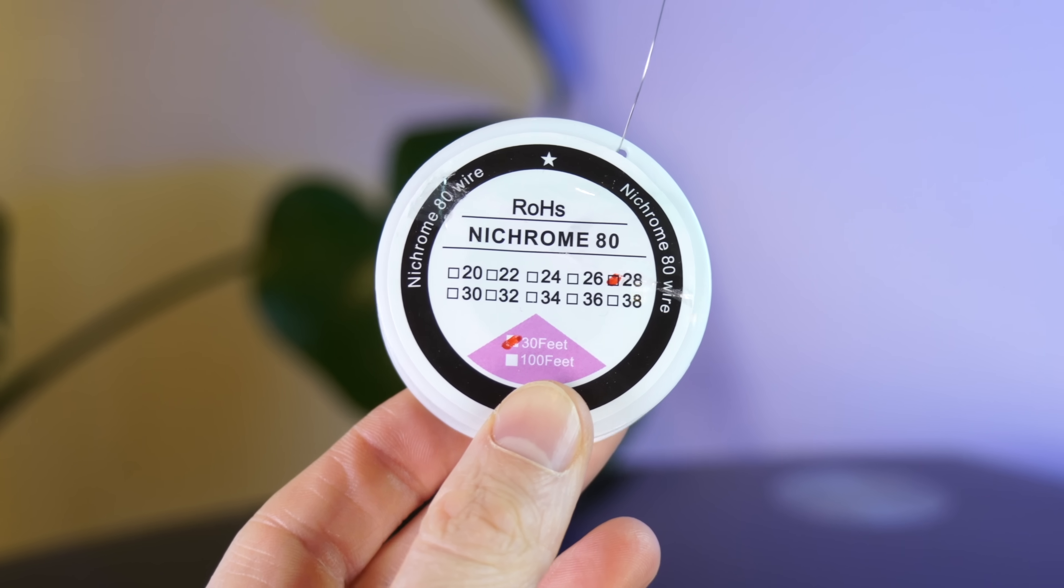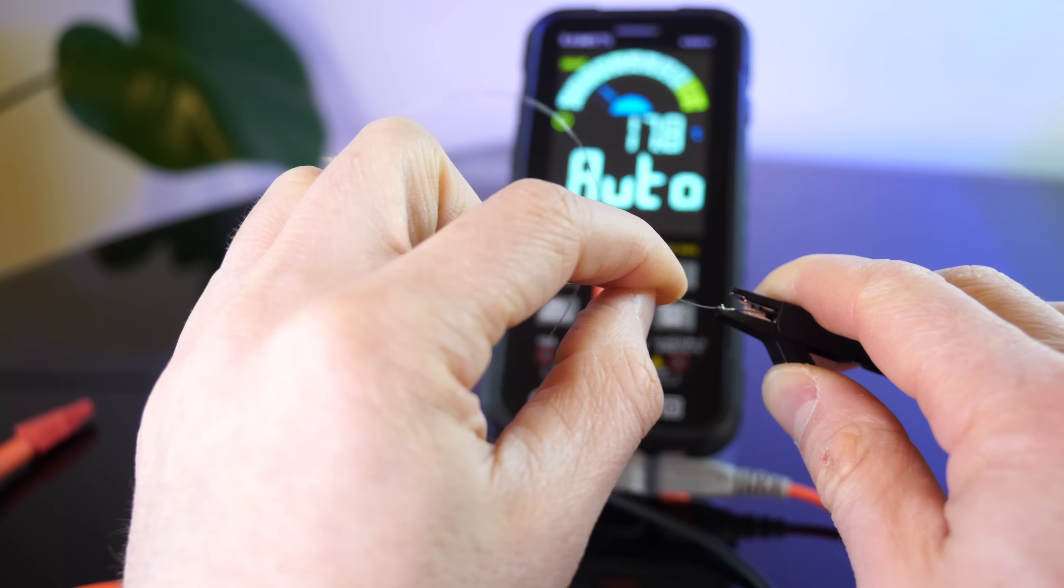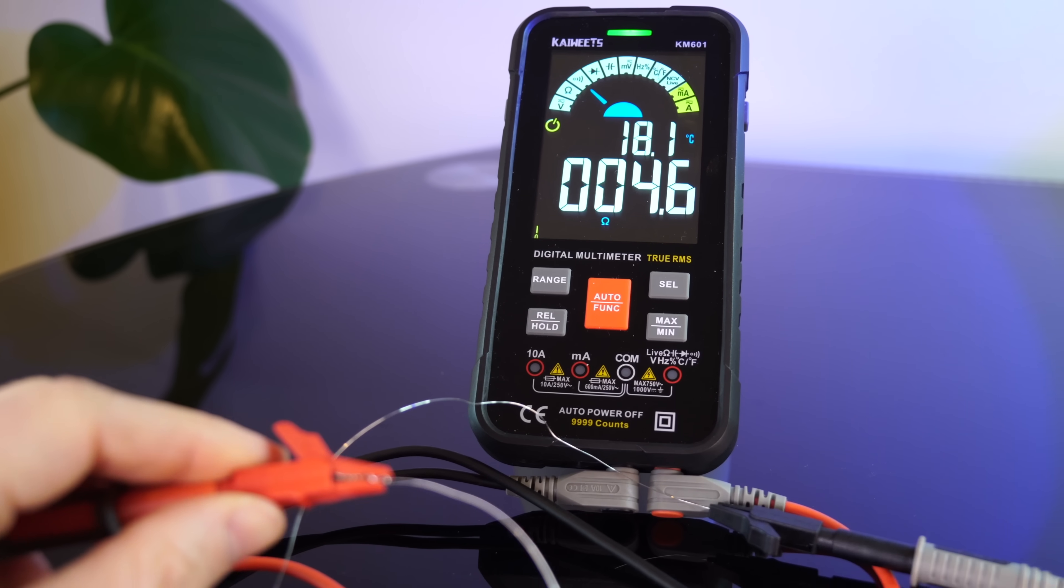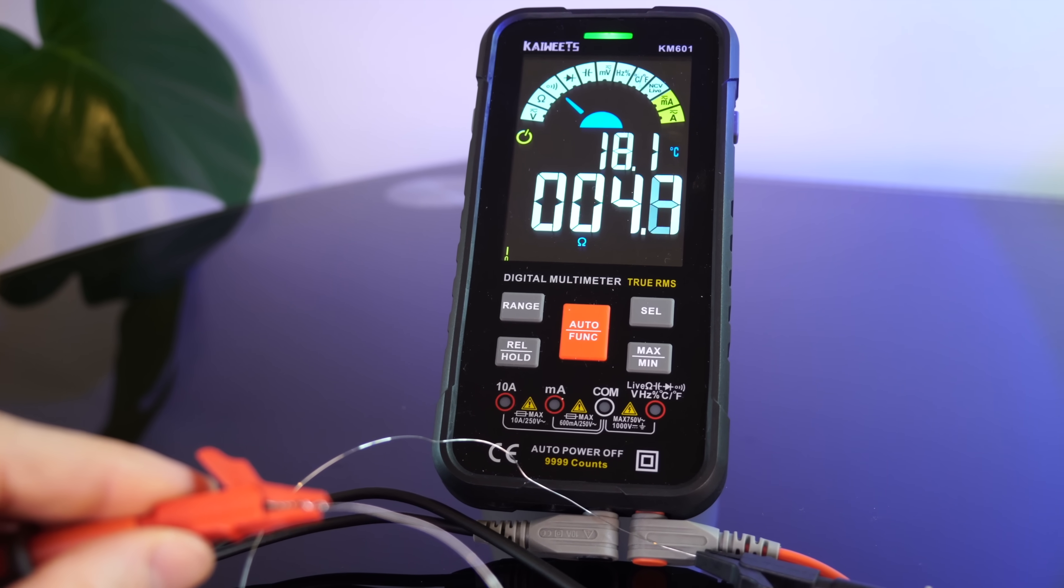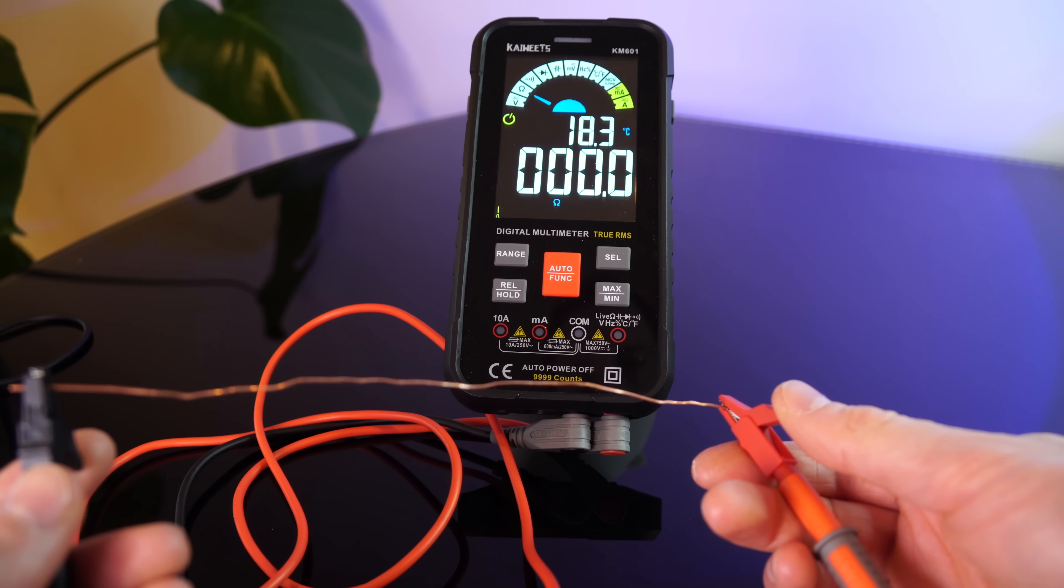Well, this is nichrome wire and this wire has an extremely high resistance. This short strand of 28 gauge wire clocks in at five ohms, which is a lot, especially compared to this short strand of copper wire with essentially no resistance.